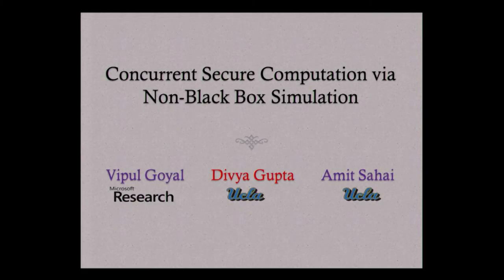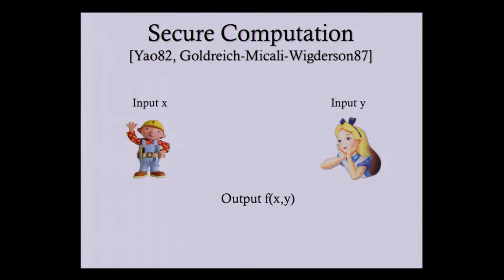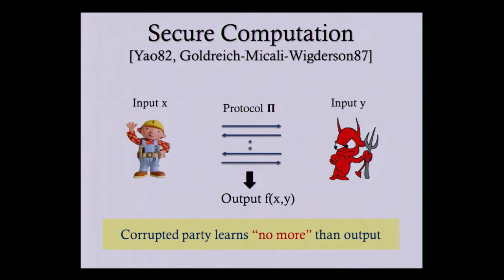Thanks, Sanjum. So I'll quickly start with secure computation. Let's say we have two parties with secret inputs who want to compute a joint function of their inputs. They can run the secure party computation protocol, and at the end of which, both parties will get the output. And the security will say that a corrupted party learns no more than the output.